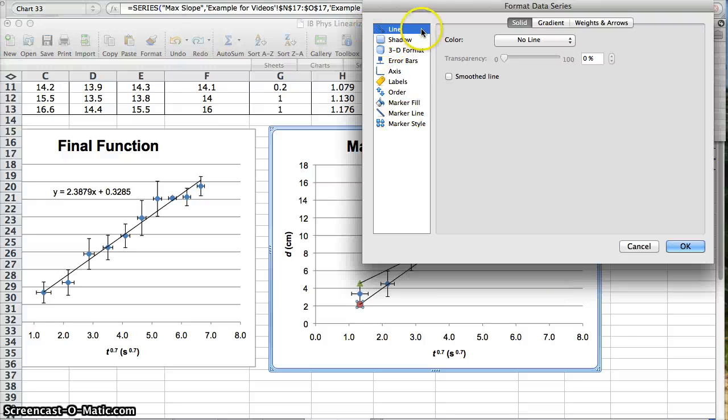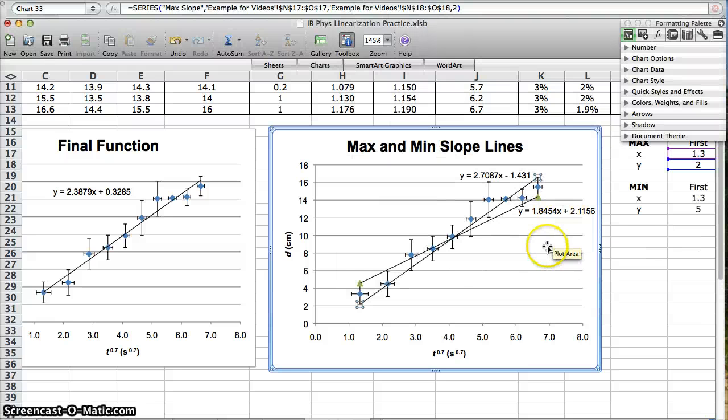You have something for line, and there's another option for marker fill and marker line. You want to get rid of the marker, so change the fill color to no fill. Change the marker line to no line. Change the color. And now it's gone.